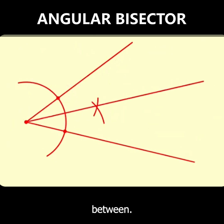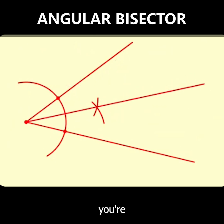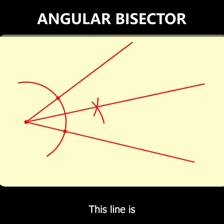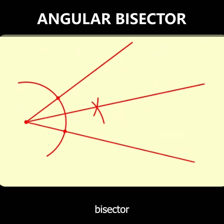In between, you'll always have to draw in between because you're trying to find the bisector. This line is actually called the angular bisector of the given angle.